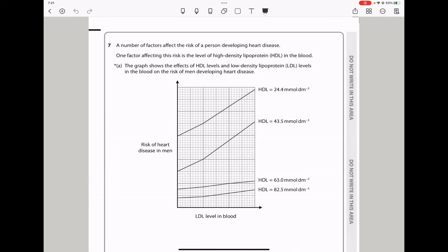Let's continue to question 7. A number of factors affect the risk of a person developing heart disease. One factor affecting this risk is the level of high-density lipoproteins, HDL, in the blood. The graph shows the effects of HDL levels and low-density lipoproteins, LDL levels in the blood on the risk of men developing heart disease. On the vertical axis we have risk of heart disease in men. On the horizontal axis we have LDL level in the blood. We have various curves representing the concentration of high-density lipoproteins from the highest to the lowest. Overall, as the concentration of LDL increases in blood, there is an increase in risk of heart disease among men at all concentrations of HDL.